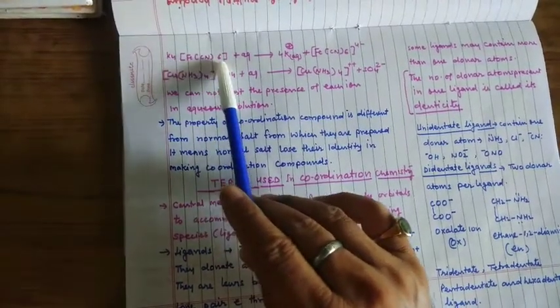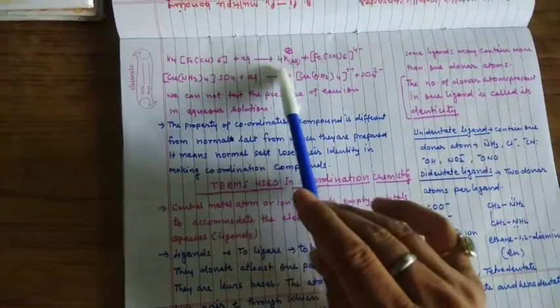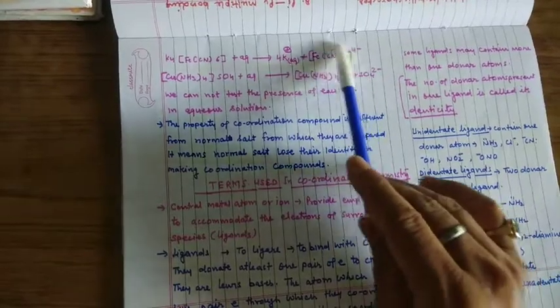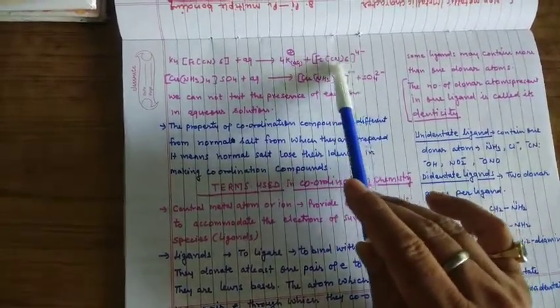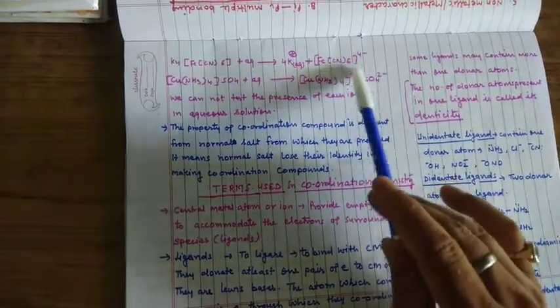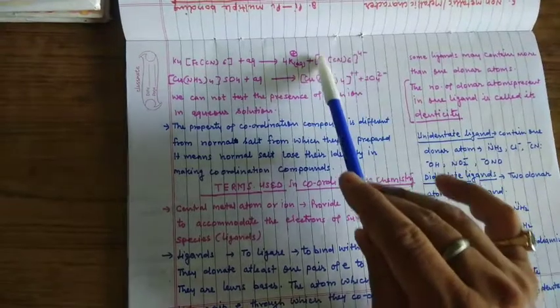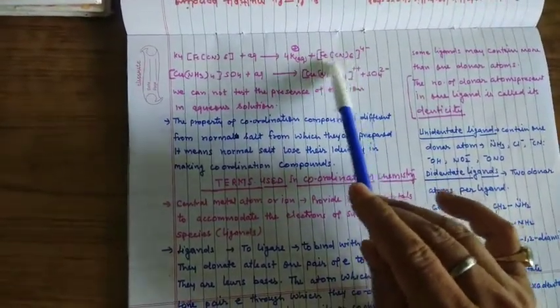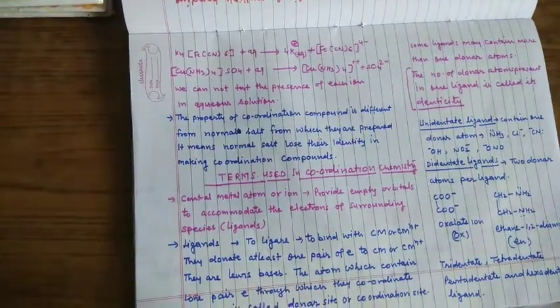If you take for example K4[Fe(CN)6] in aqueous solution, so it dissociates to give 4K+ and 1 [Fe(CN)6]4- ion. So this solution will not give any test for iron as well as cyanide ion. It means this part of this coordination compound is not dissociated in the aqueous solution because here iron and cyanide both are held by covalent bond or dative bond.